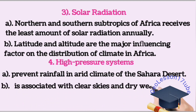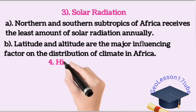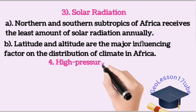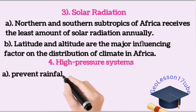Moisture, latitude, and altitude are also major influencing factors on the distribution of climate in Africa. High-pressure systems prevent rainfall in the arid climate of the Sahara Desert, and are associated with clear skies and dry weather.